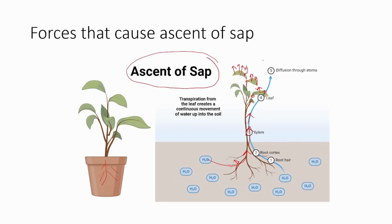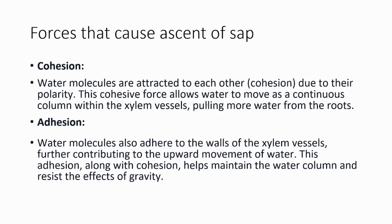There is a word used for the transportation of water and its minerals upward, and that is called ascent of sap. Ascent of sap is the movement of sap upward from the root to the tip of the leaf. Ascent of sap is caused by transpirational pull — but is it only transpirational pull? No, there are two other forces as well.